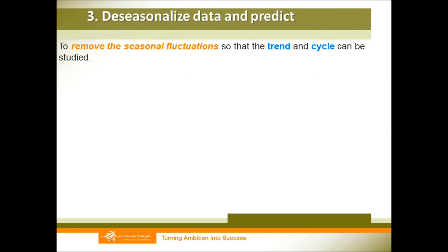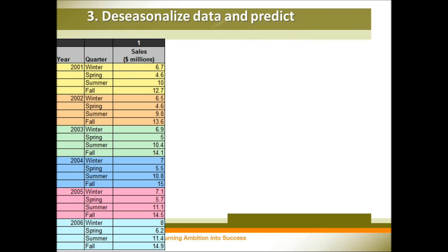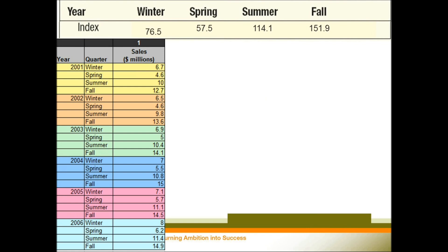Now let's look at the third part: de-seasonalized data and prediction. We have our seasonal index and we know our products are very sensitive to the seasons, so within a year there are seasonal fluctuations. We need to remove these seasonal fluctuations so that we can study the trend using the equation ŷ = a + b × t, where t represents time. For the winter sales, we divide the real sales by the winter index; for spring sales, we divide by the spring index; and so on for every year and quarter. We call this procedure de-seasonalization of the data.